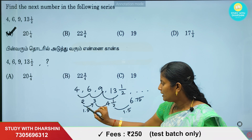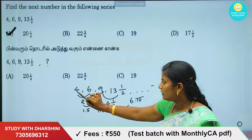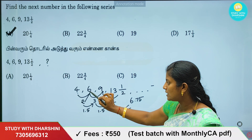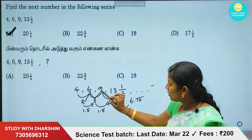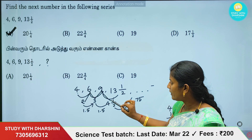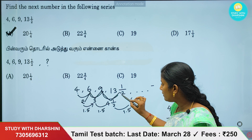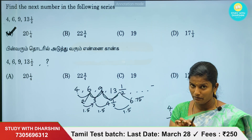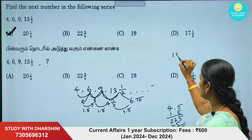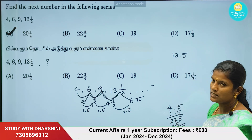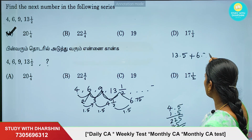Let's see how the first question works. 4 and 2 add to 6. 6 and 3 add to 9. 9 and 4.5 add to 13.5. Now if we add 6.75 to the next number — 13 and 1/2, which is 13.5 in decimal — we will add 6.75.